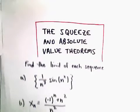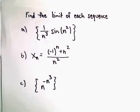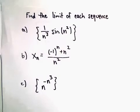Alright, in this video we're going to look at some examples related to using the squeeze theorem or absolute value theorem. In part A here, we're going to find the limit of a sequence: 1 over n cubed times sine of n squared.